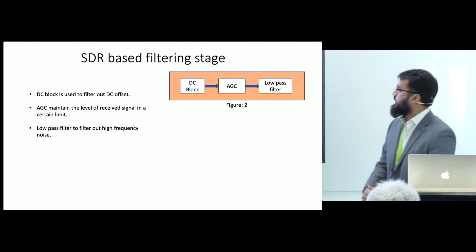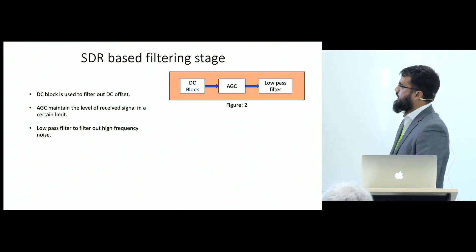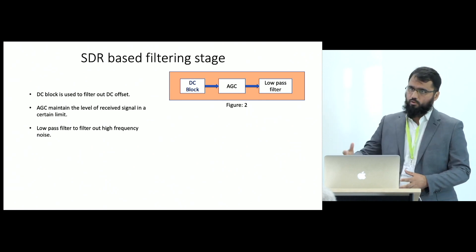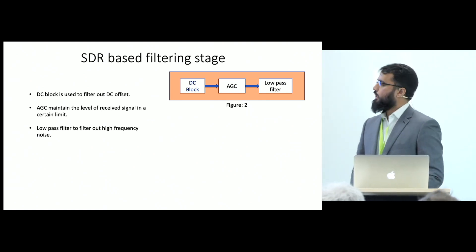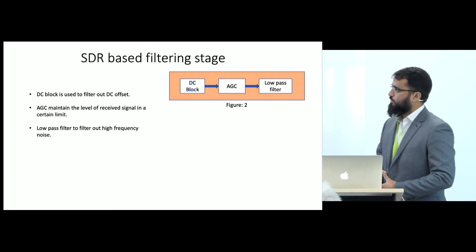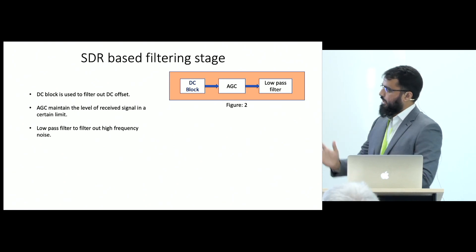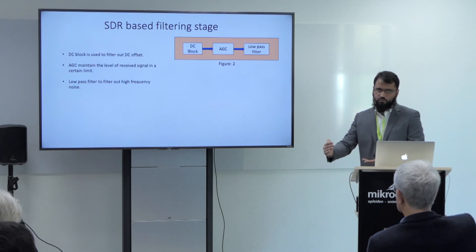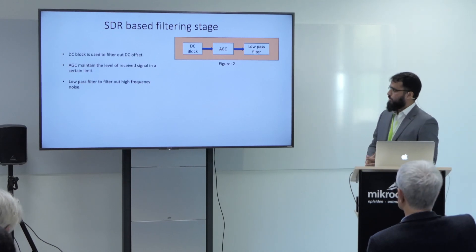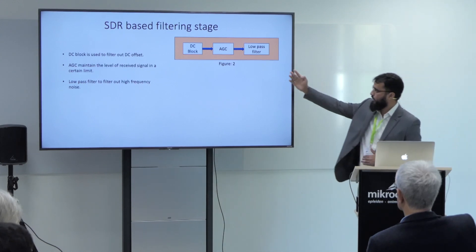The filtering stage is comprised of three stages. First, there is a DC block; then there is an automatic gain control; and then there is a low pass filter. These filtering stages are designed in GNU Radio — we used the open-source GNU Radio software to control the USRP and design the filtering stage. The DC block works on a moving average filter algorithm: based on its length, it takes a number of samples, computes their average, and subtracts it from the incoming optical signal. Automatic gain control is used because the optical signal varies due to a number of factors, keeping it within a certain limit.